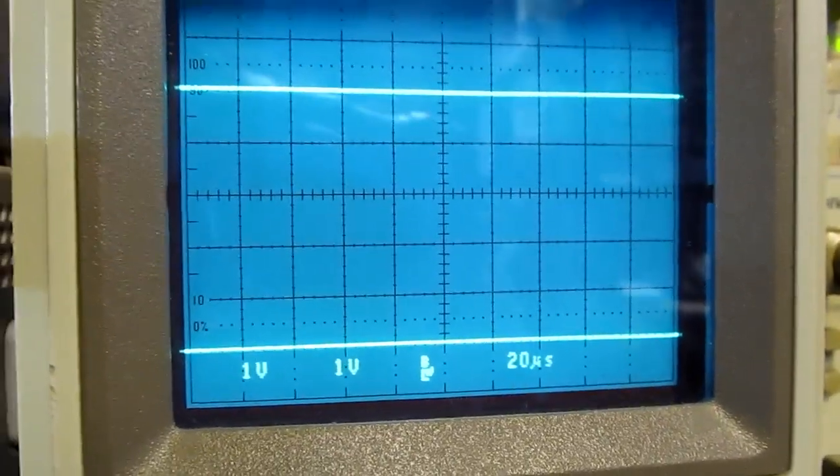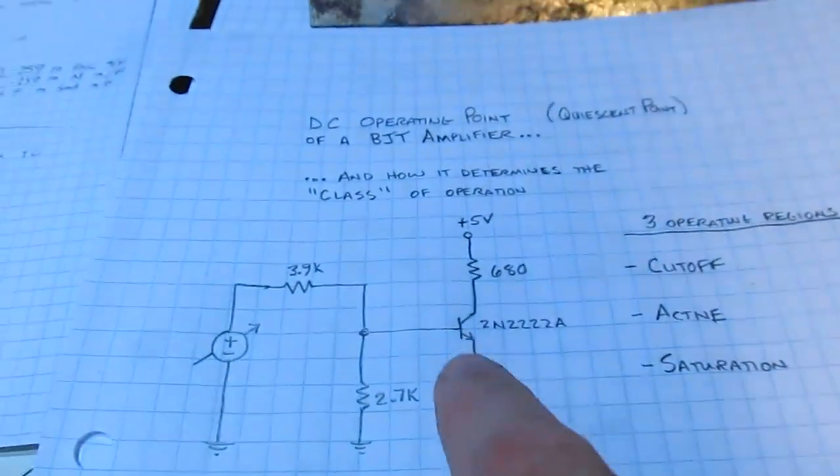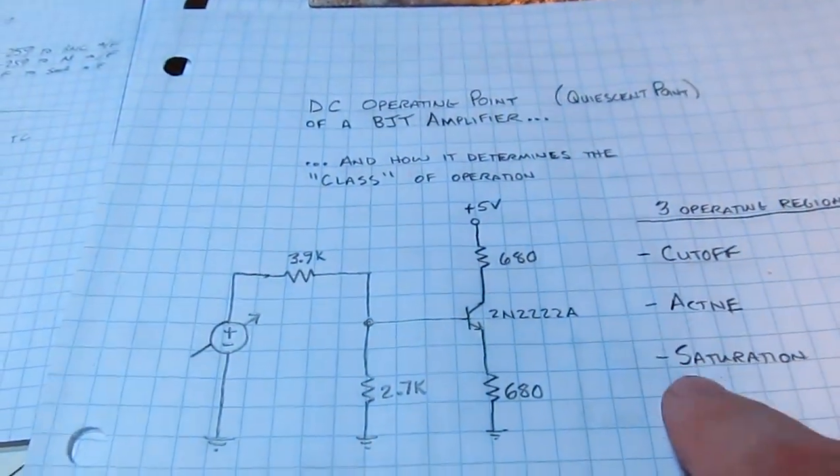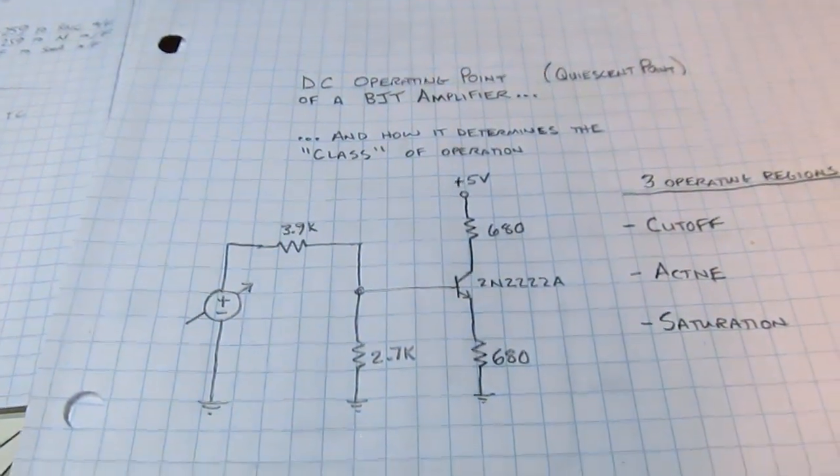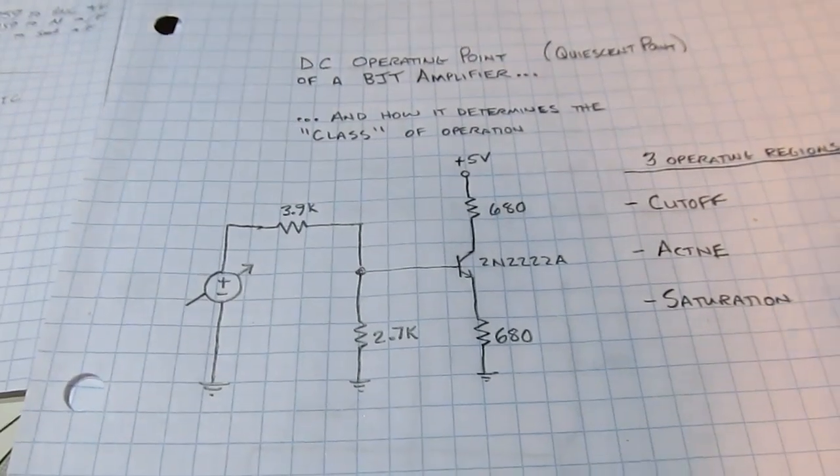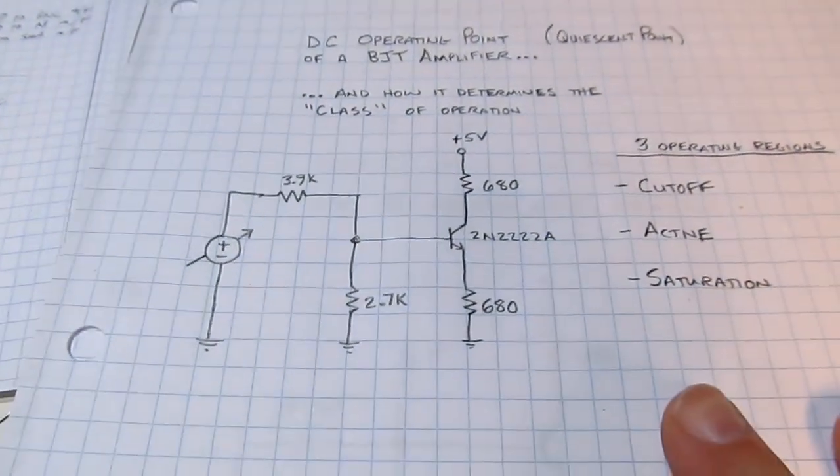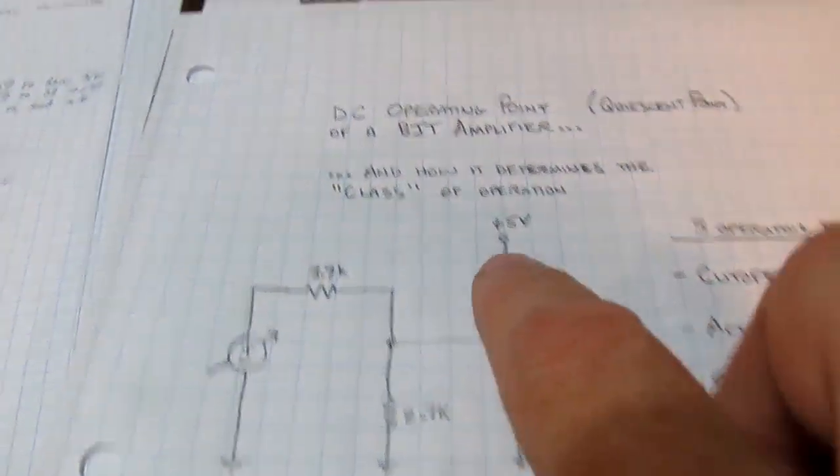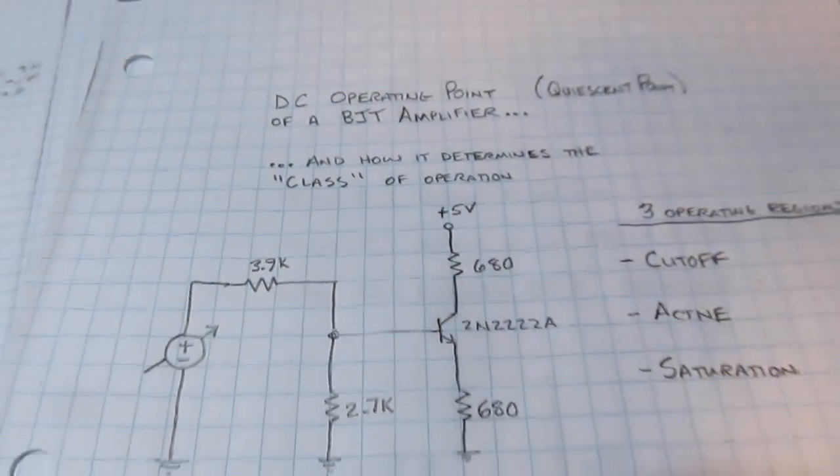So that's what we mean when we talk about the operating regions or the quiescent point of the transistor. Is it cut off? Is it active? Or is it in the saturation region? So let's see how that relates to the class of operation of an amplifier.